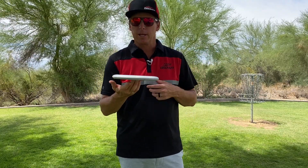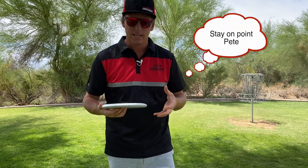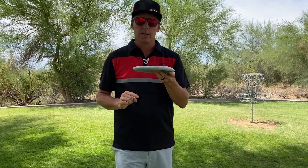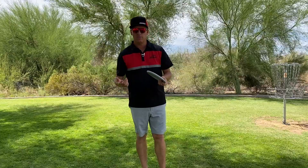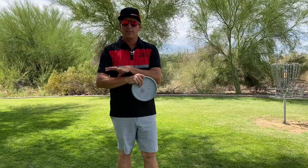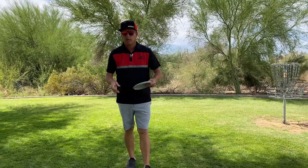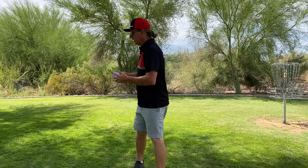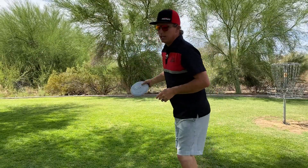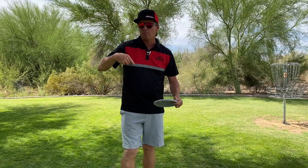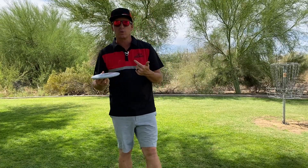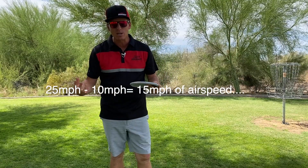One amazing thing about a disc is that it spins, which brings in gyroscopic effect — but we won't get into that right now. Let's mainly discuss the interplay of air between the disc and the air. If I'm putting at 25 miles an hour and there is zero air moving around me, my airspeed will be 25 miles an hour and I can expect a pretty true putt. But if I have a 10 mile an hour tailwind and my putt goes 25 miles an hour, I can subtract the 10 from the 25 and I'm sitting at 15 miles an hour of airspeed.